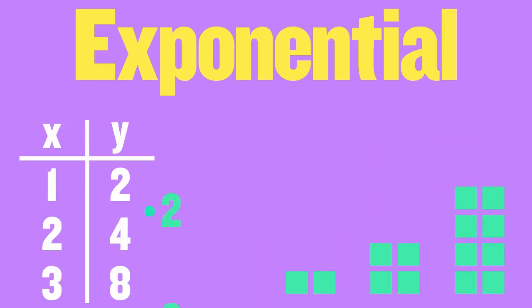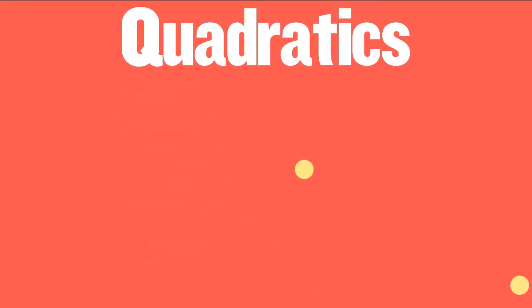Exponential patterns constantly multiply or divide. And quadratic functions have a second difference that constantly adds or subtracts.